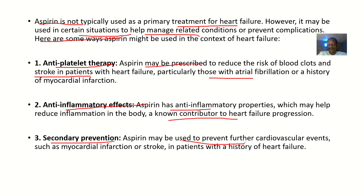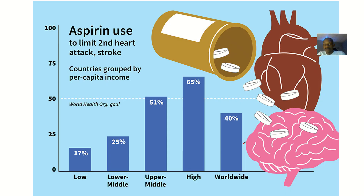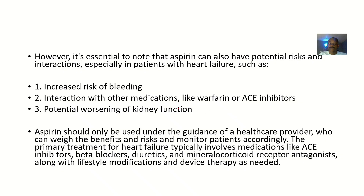Third, secondary prevention. Aspirin may be used to prevent further cardiovascular events such as myocardial infarction or stroke in patients with a history of heart failure. This is essentially administering prophylactic measures, because the patient was known to have heart failure before, so you want to prevent recurrence.